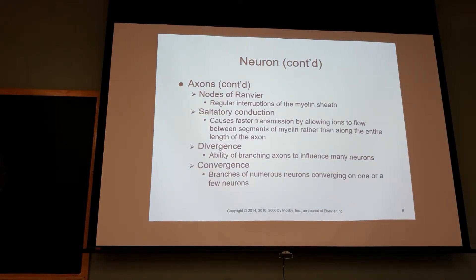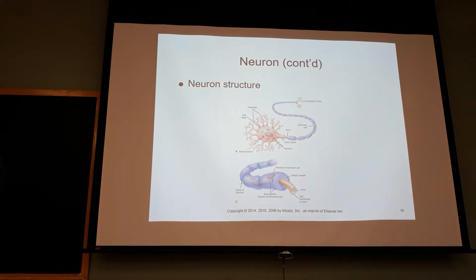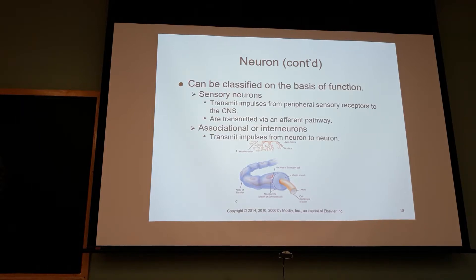Nodes of Ranvier are interruptions in the myelin sheath. You have saltatory conduction — fast transmission between ions. Divergence is the ability to branch axons, and convergence is branches of neurons converging at one or a few neurons. You don't need to worry about those.